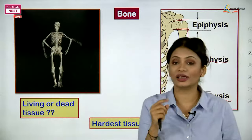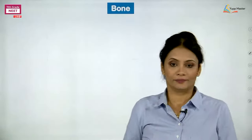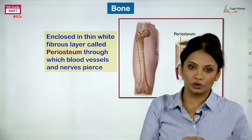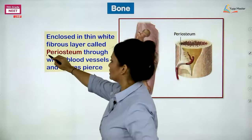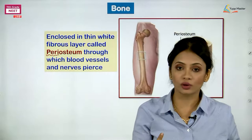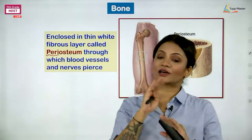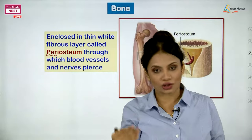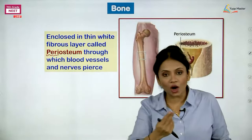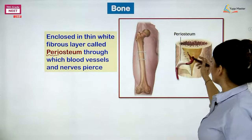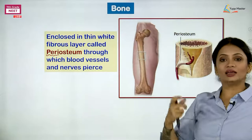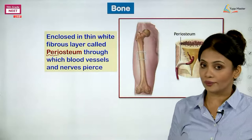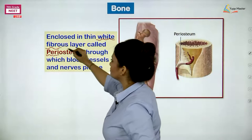Just like cartilage, bone also has an outer covering. Since 'peri' means all around, this covering is called the periosteum. 'Osteum' is a word specific to bone, just as 'chondro' was used for cartilage. The periosteum is a white fibrous layer made of collagen fibers, through which blood vessels penetrate to supply the bone.